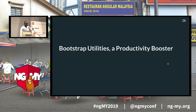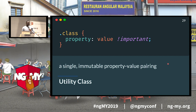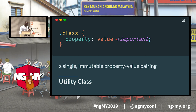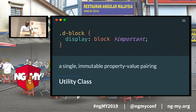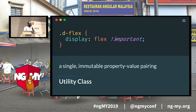The next part of Bootstrap is utilities, and this is my favorite because it makes you more productive. A utility is a single immutable property-value pairing — one class, one property, one value, with !important so it always wins when applied. For example, for the display property, Bootstrap has classes like 'd-block' for display block and 'd-flex' for display flex. There are many, many utilities.